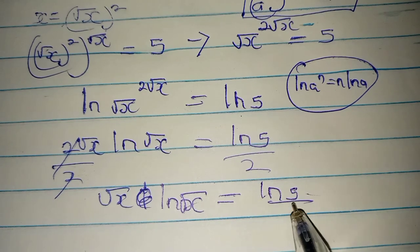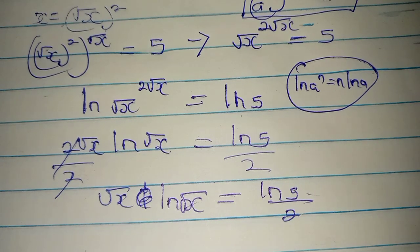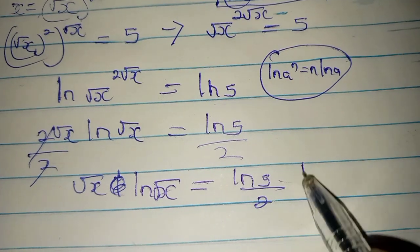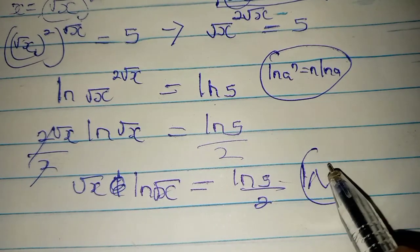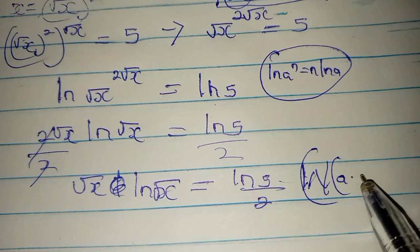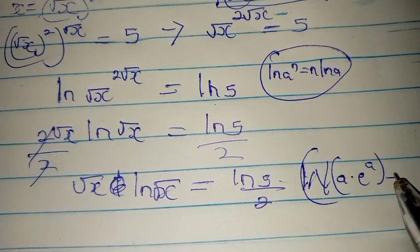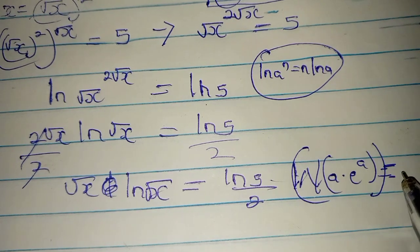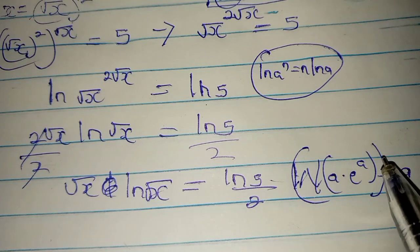So you are going to be using the W Lambert function, but we need to recall this part. We say that the W Lambert function of A times e to the power of A equals A.